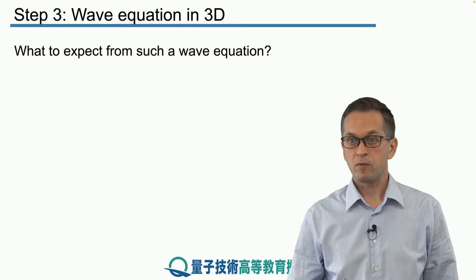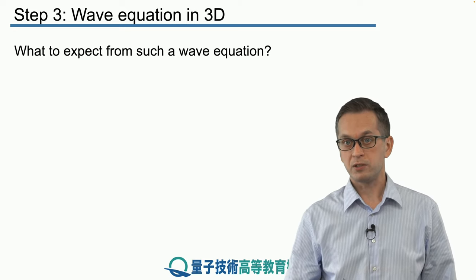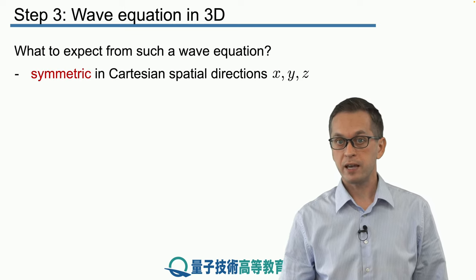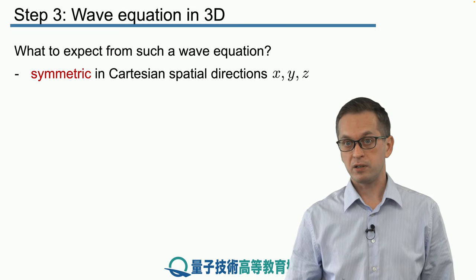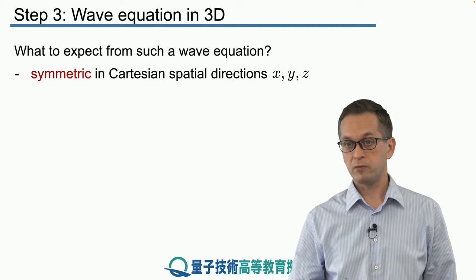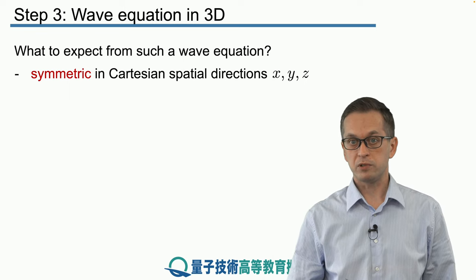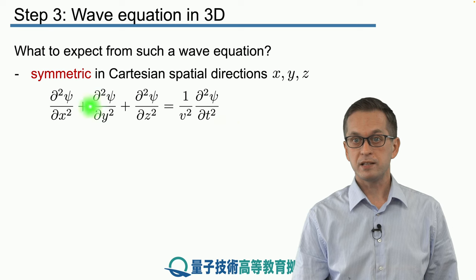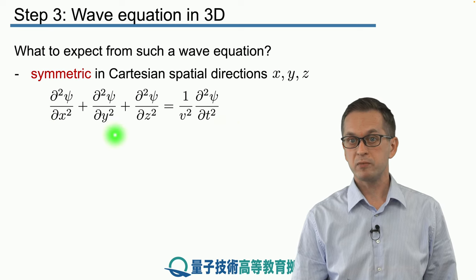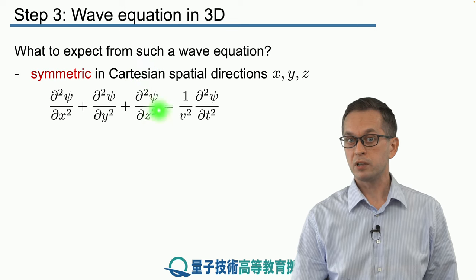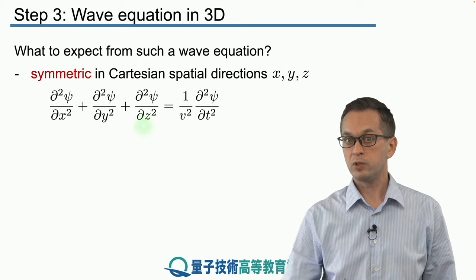What do we expect from the wave equation in three dimensions? First of all, we expect that the spatial coordinates x, y, and z will enter in a symmetric fashion. Rather than deriving the wave equation in three dimensions from scratch like we did in the one-dimensional case, we're just going to state it and then look at some of its properties and how to use it. This is the wave equation in three dimensions — it's very similar to the one-dimensional case, but now we include second-order partial derivatives with respect to y and with respect to z.